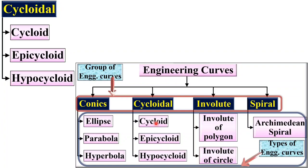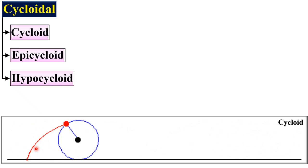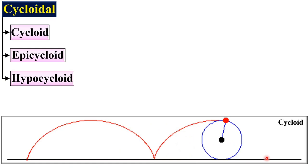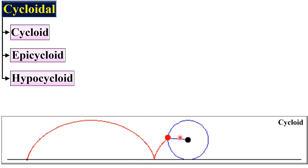Before starting the cycloid, let's understand the concepts of cycloid, epicycloid and hypocycloid. Here you can see this red color curve is called the cycloid. Very simply, when the rolling circle rolls on a straight line, then the point on the circumference of the rolling circle makes a path that is called the cycloid.